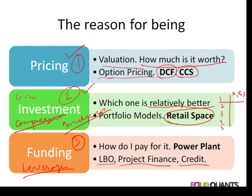Three separate models that we'll work with use a basic DCF approach. How do we apply or extend that to value the what-is-it-worth question for a cross-currency swap? Which one is a better question, by applying fairly detailed analysis, scenario testing, and model building to the retail space question — including the impact of leverage and a series of scenarios — and finally, determining how much leverage can we support by looking at the power plant case.